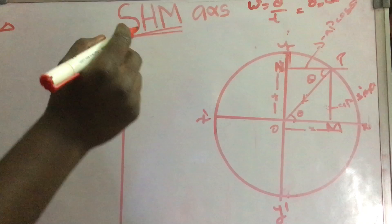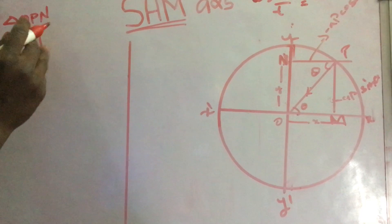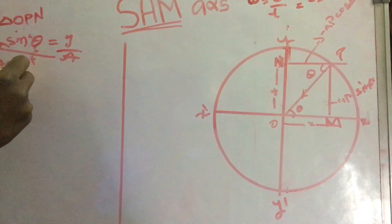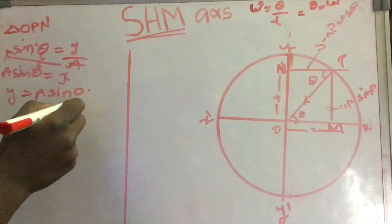From triangle OPN, sin theta equals y by A. Now I have taken A to here. A sin theta is equal to y. I have centered this, it became multiplication. Y is equal to A sin theta.